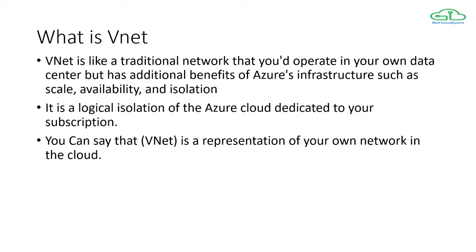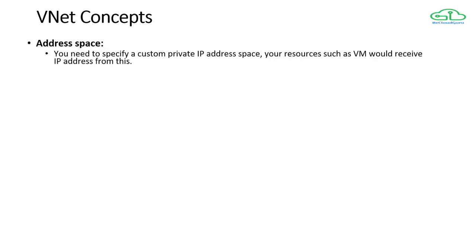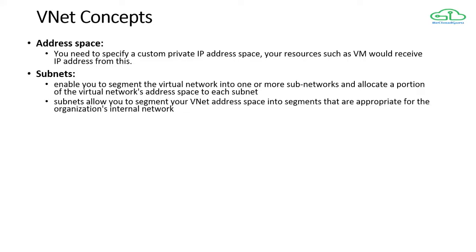Now let's talk about certain concepts of VNet. The first concept is address space - you require a custom private IP address space, and your Azure resources such as virtual machines will receive IP addresses from that range. You then divide that VNet IP range into different subnets, which help you segment your virtual network based on your needs. You need to define a subnet address space appropriate for your organization's internal requirements.